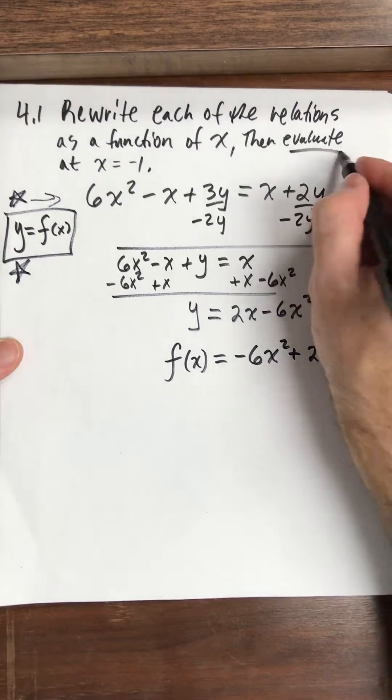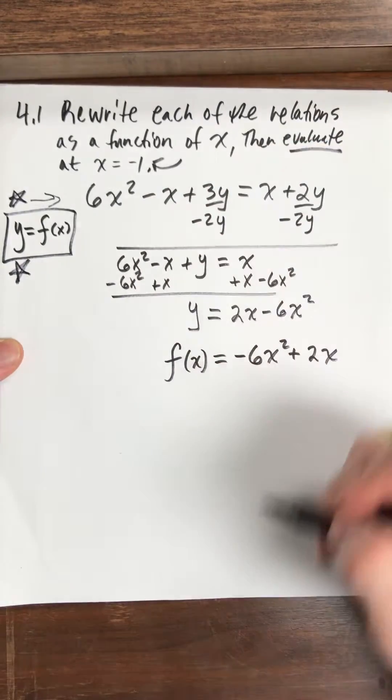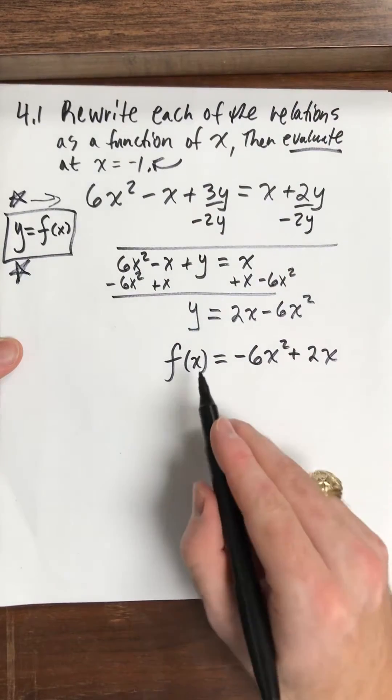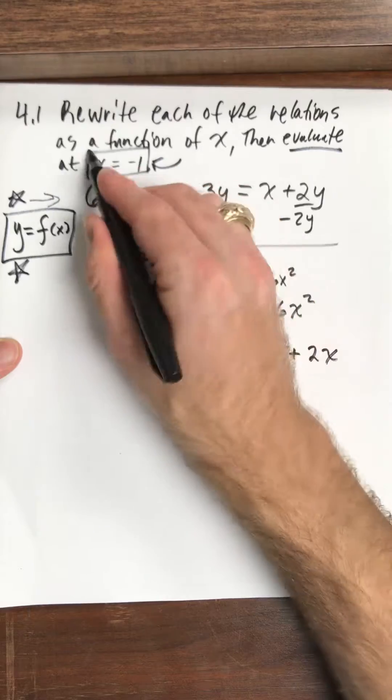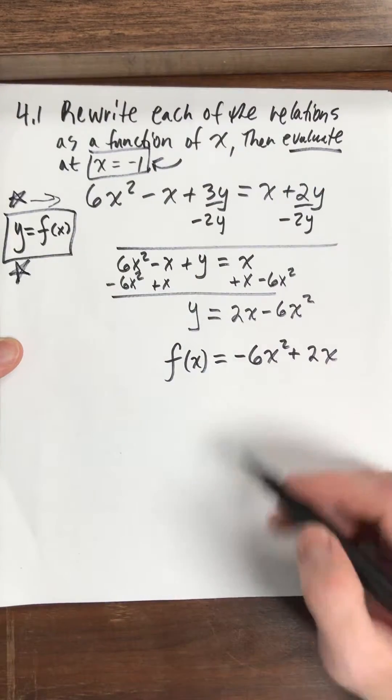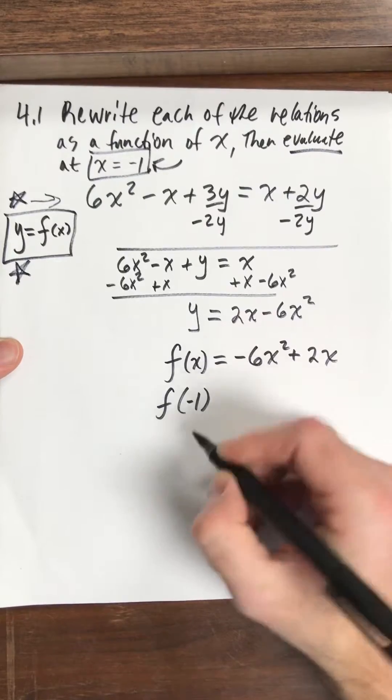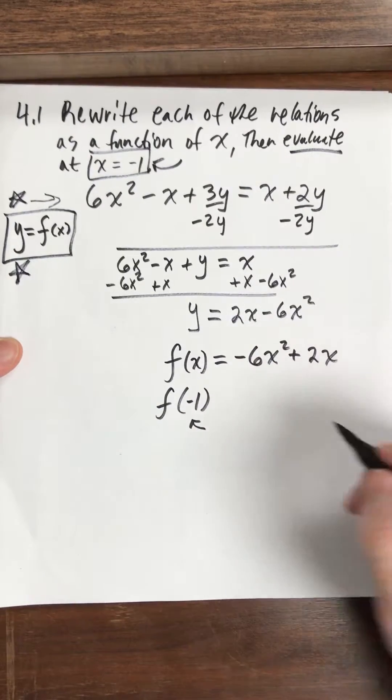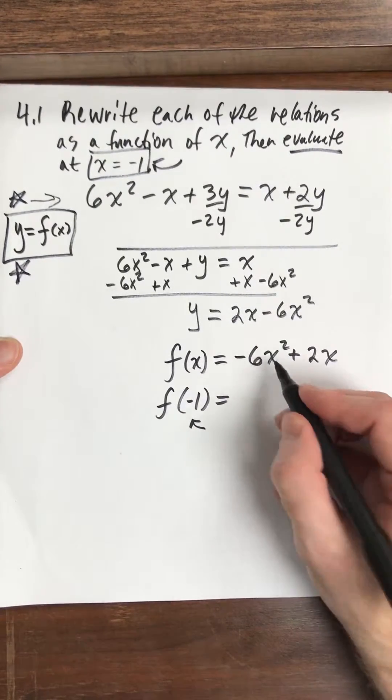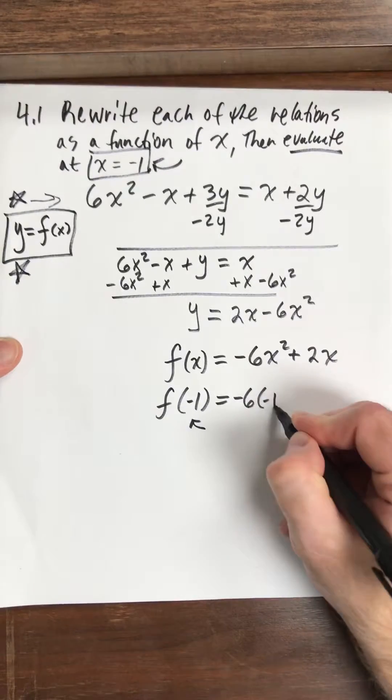Okay, the last thing I'm asked to do is to evaluate at x equal negative 1. So literally everywhere I see an x I'm going to plug in a negative 1. And what I want you to do is just like this is in parentheses here, I want you to put a parentheses everywhere you see an x.